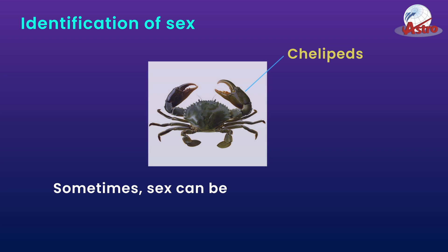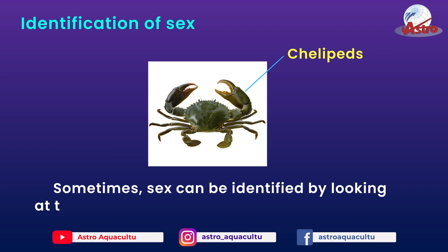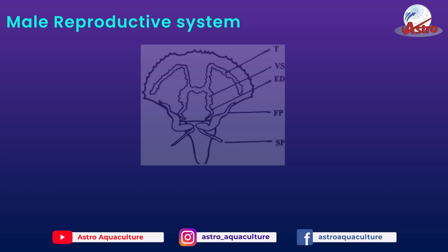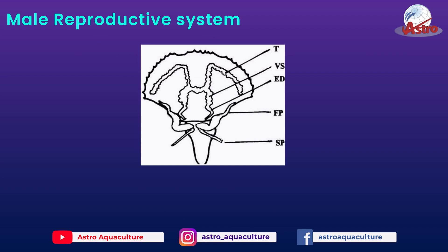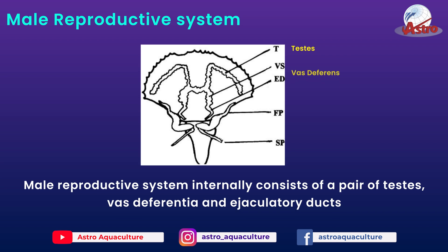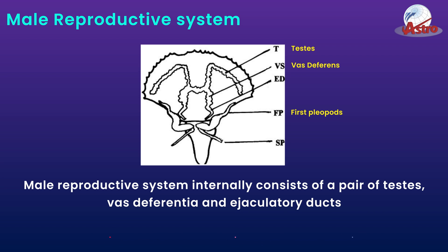Sometimes, sex can also be identified by looking at the chelipeds. The male cheliped is comparatively larger than the female's.